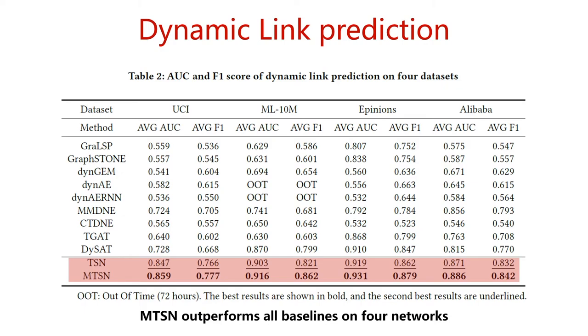The average AUC and the average F1 are used as evaluation indicators. All algorithms are run 10 times and show the average value at all time steps. Our MTSN outperforms all baselines on four networks on dynamic link prediction tasks.